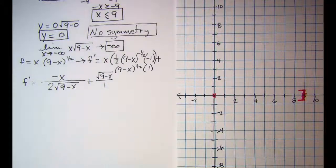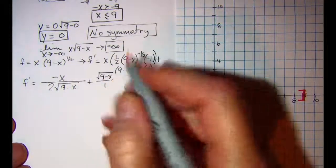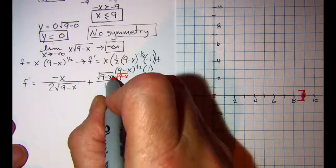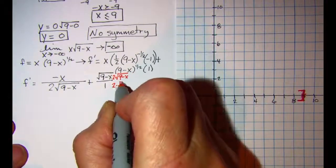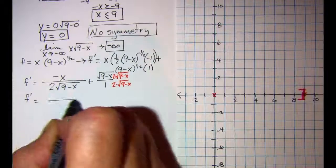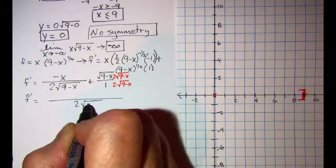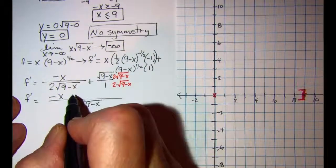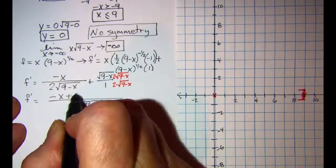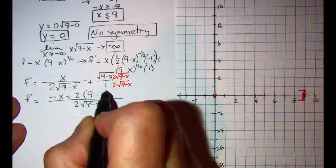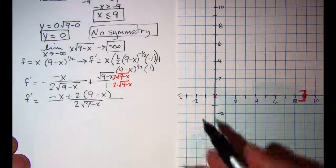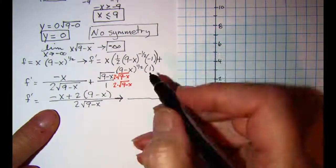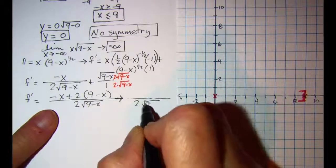So let's multiply top and bottom of this term by the radical, by 2 times the radical so that I can get a common denominator. So I have 2 times the square root of (9 minus x) in the denominator, and I have negative x plus 2 times (9 minus x) in the numerator.